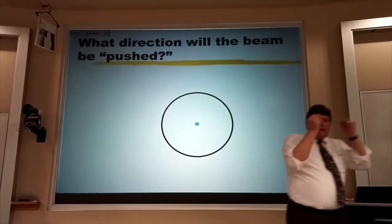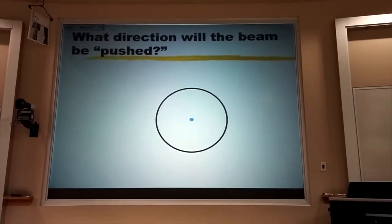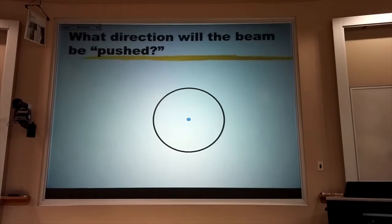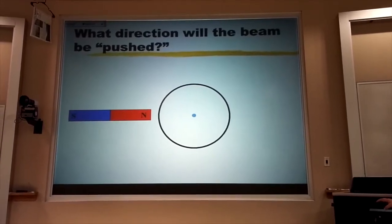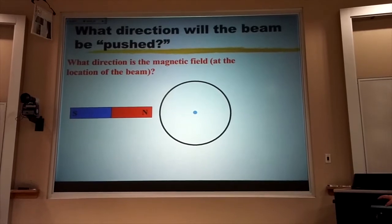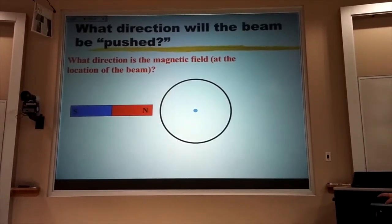Electrons are negative. Remember that. Negative electrons racing towards you. If I bring that north pole there, what direction is the magnetic field due to that north pole at the location of the beam?